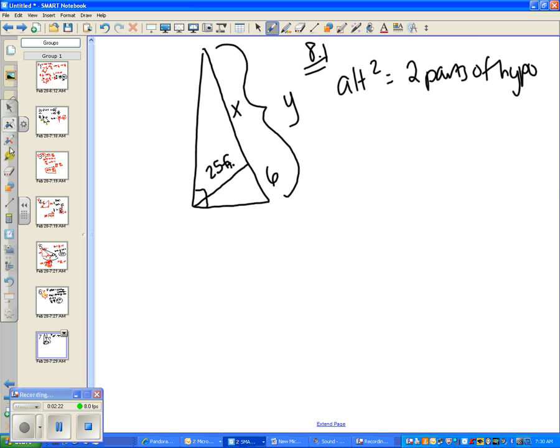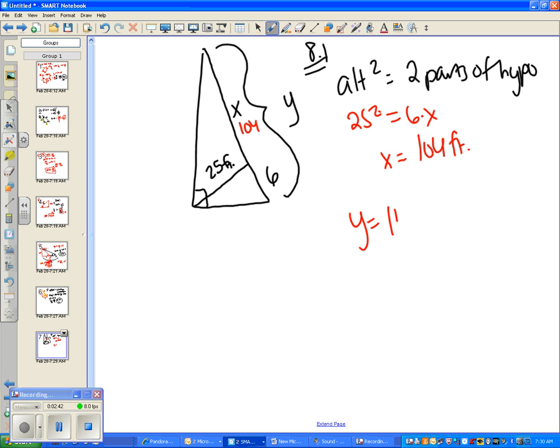So what you're going to do is 25 squared, since that's the altitude, equals 6 times x, and you solve, and you get that x equals 104 feet, which is one of the answer choices. But we wanted to figure out what the whole thing was, so you had to add 6, and really your answer should have been 110 feet. So if you got 104, you were super close, but you needed to add 6.